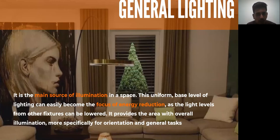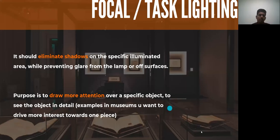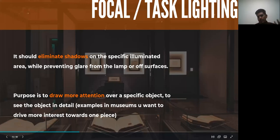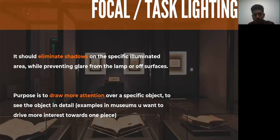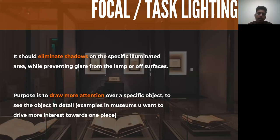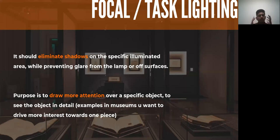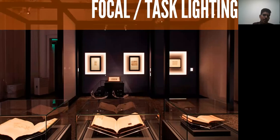The next principle is focal glow — when you want to draw more attention to a specific object. For example, lighting is more intense toward wall arts and highlighted bookshelves on shelves. Focal glow means settling out other lighting and enhancing one specific object or architectural element, so the interest of any user or visitor moves toward that.